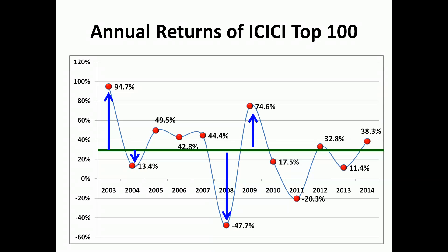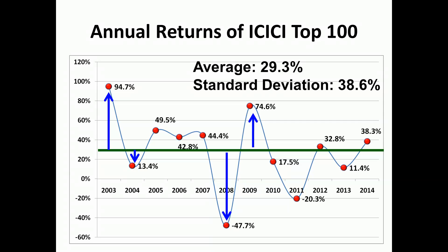I define my average in a way that is always positive, and that's called the standard deviation. The standard deviation is the average of deviations from the arithmetic mean. The average — the green line — is 29.3%, and the standard deviation represents the average of all these deviations, both the up arrows and the down arrows.